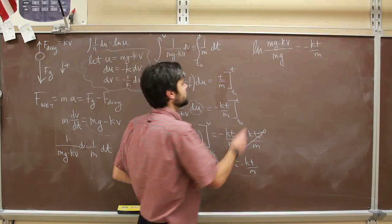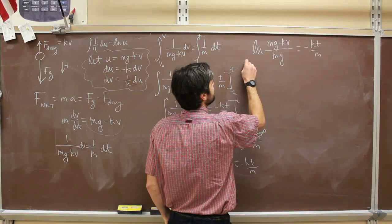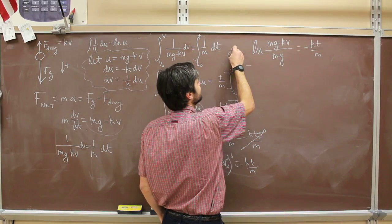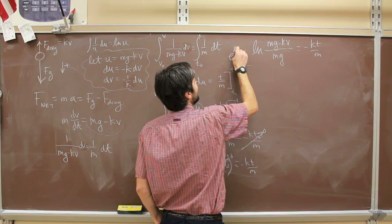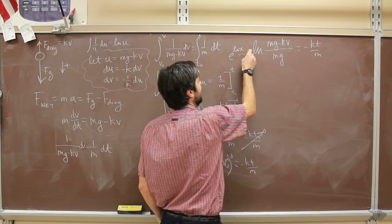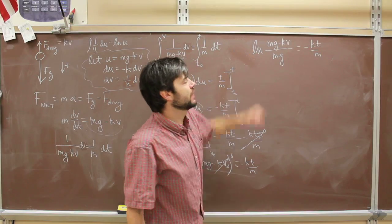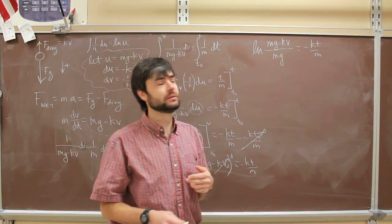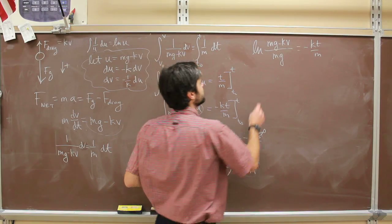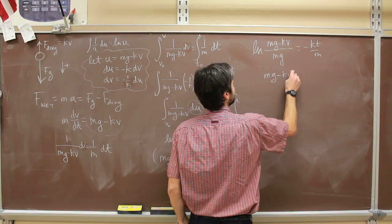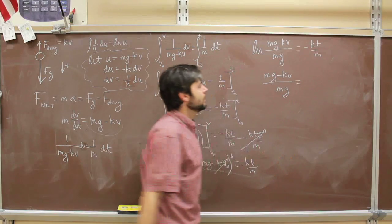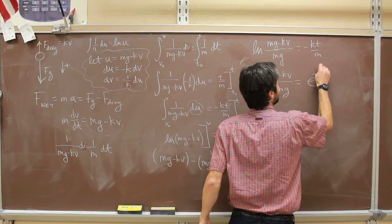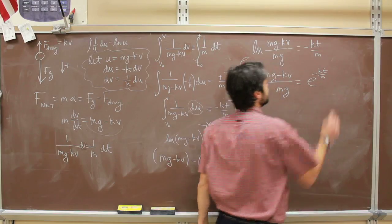So if we take e to the ln of blah, blah, blah—what's e to the ln of x? It's x. So what's e to the ln of mg minus kv over mg? It's mg minus kv over mg. So we'll do that. That just becomes mg minus kv over mg. And whatever, if we're going to e this side, we're going to take that, and we have to do the same to the other side, e to the minus kt over m.